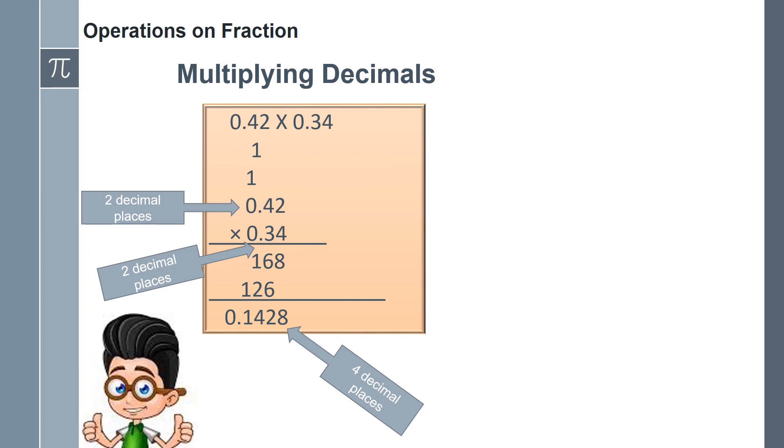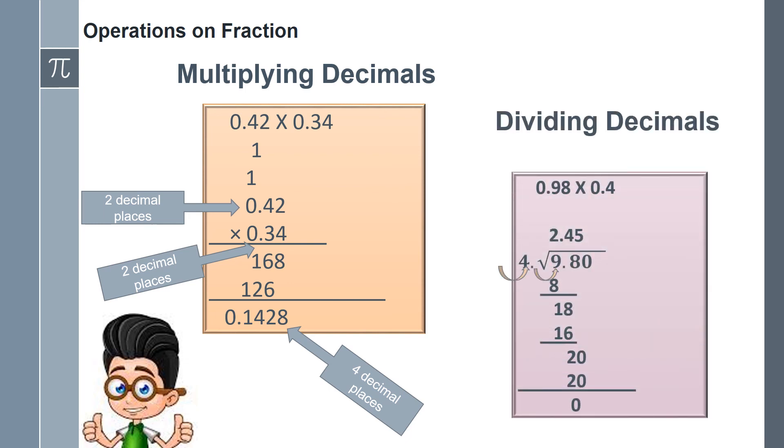Another operation is dividing decimals. To divide decimals, move the decimal point to the right both in the divisor and in the dividend as many decimal places as there are in the divisor. Divide as integers and place the decimal point in the quotient just above the decimal point in the dividend. Divide up to the desired number of decimal places in the quotient.